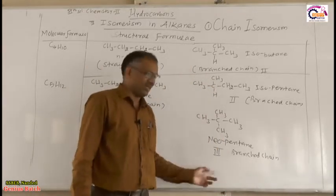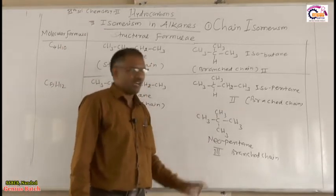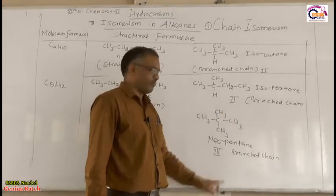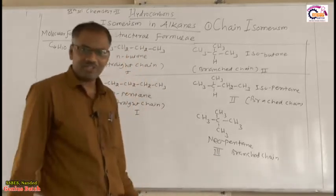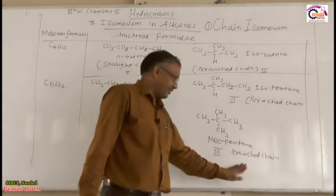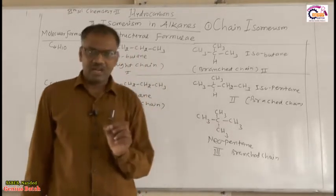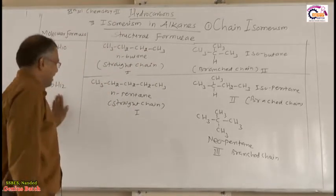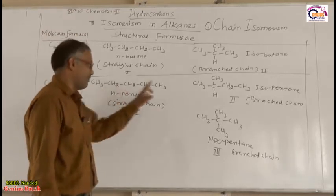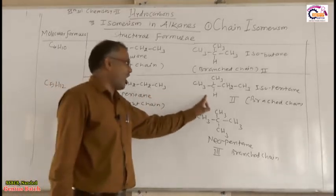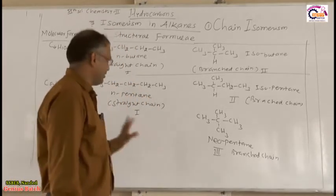Keep in mind that the second and third compounds are not chain isomers of each other because they have the same carbon skeleton — both are branched. However, first and second are chain isomers of each other, and first and third are also chain isomers of each other. So the definition: two or more compounds having the same molecular formula but different nature of chain of carbon atoms are called chain isomers, and the phenomenon is known as chain isomerism.